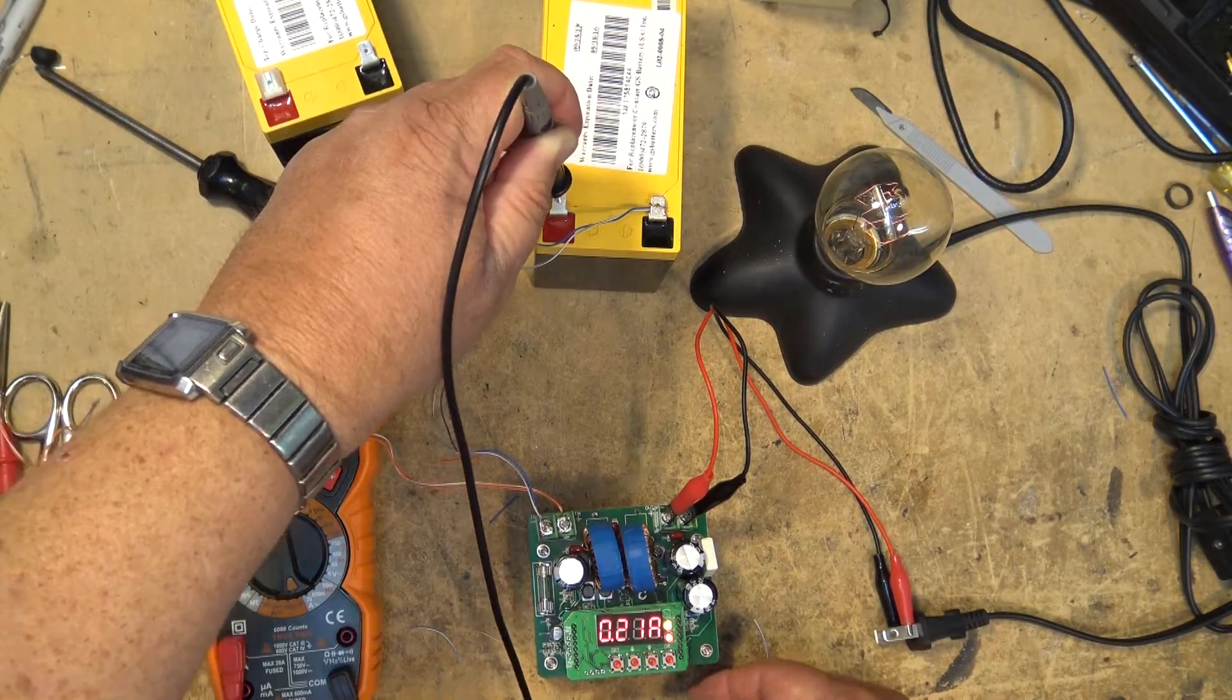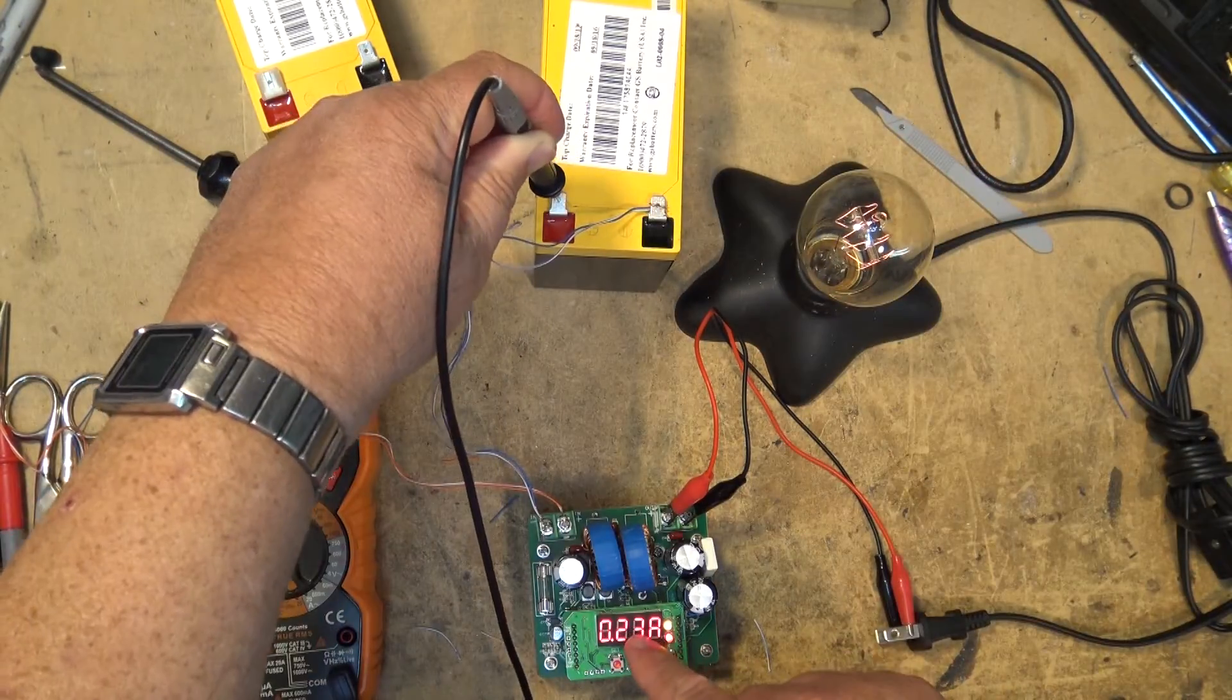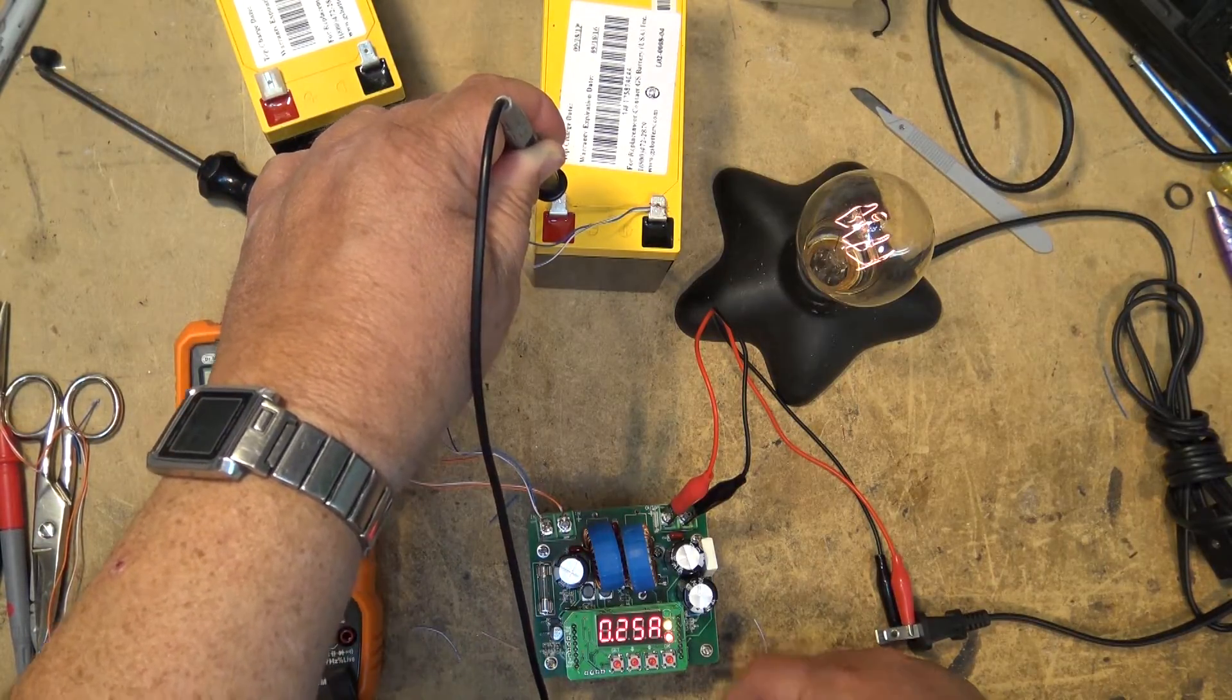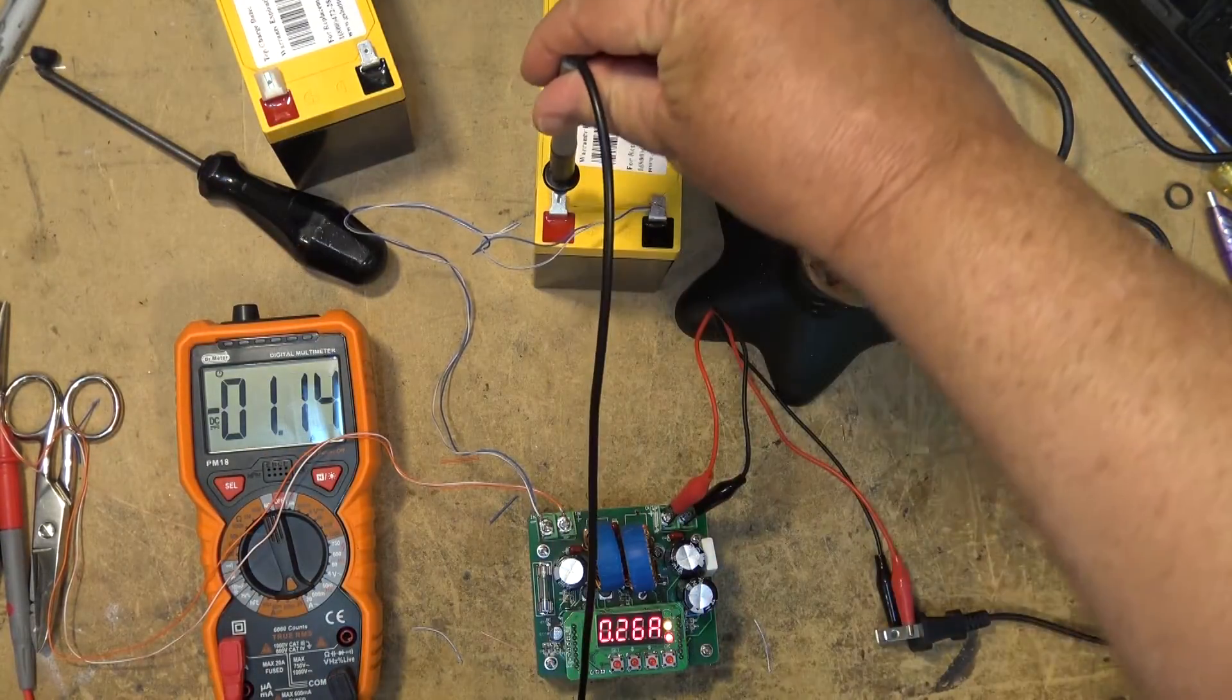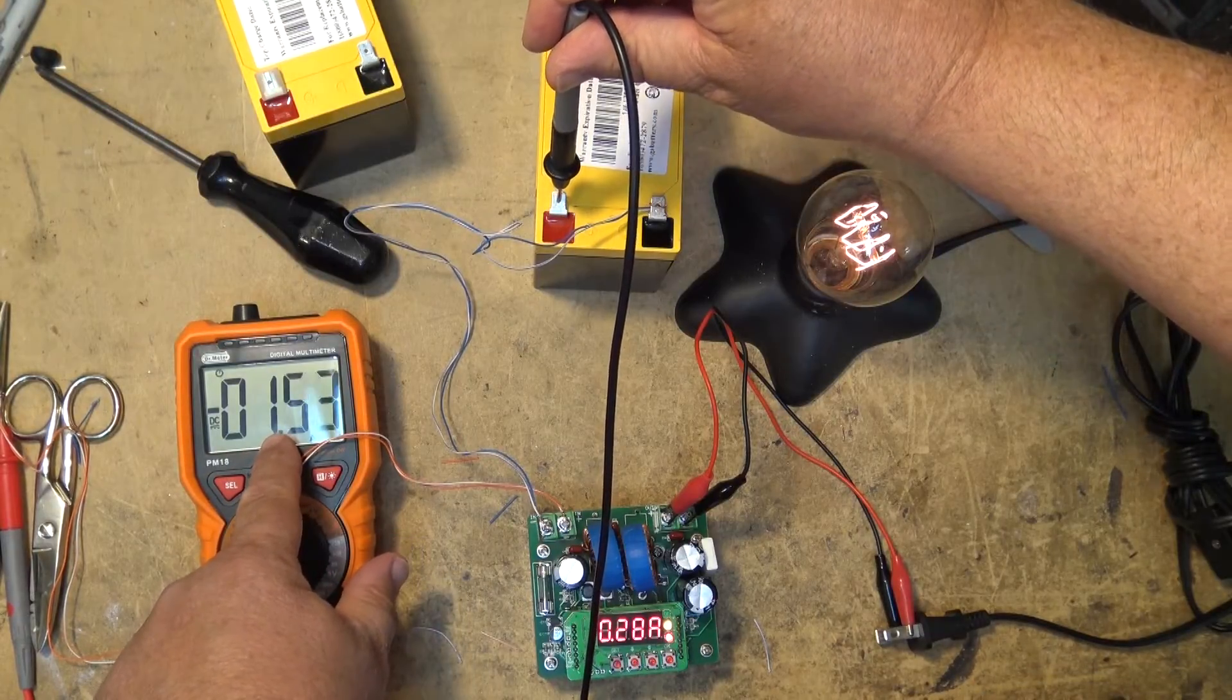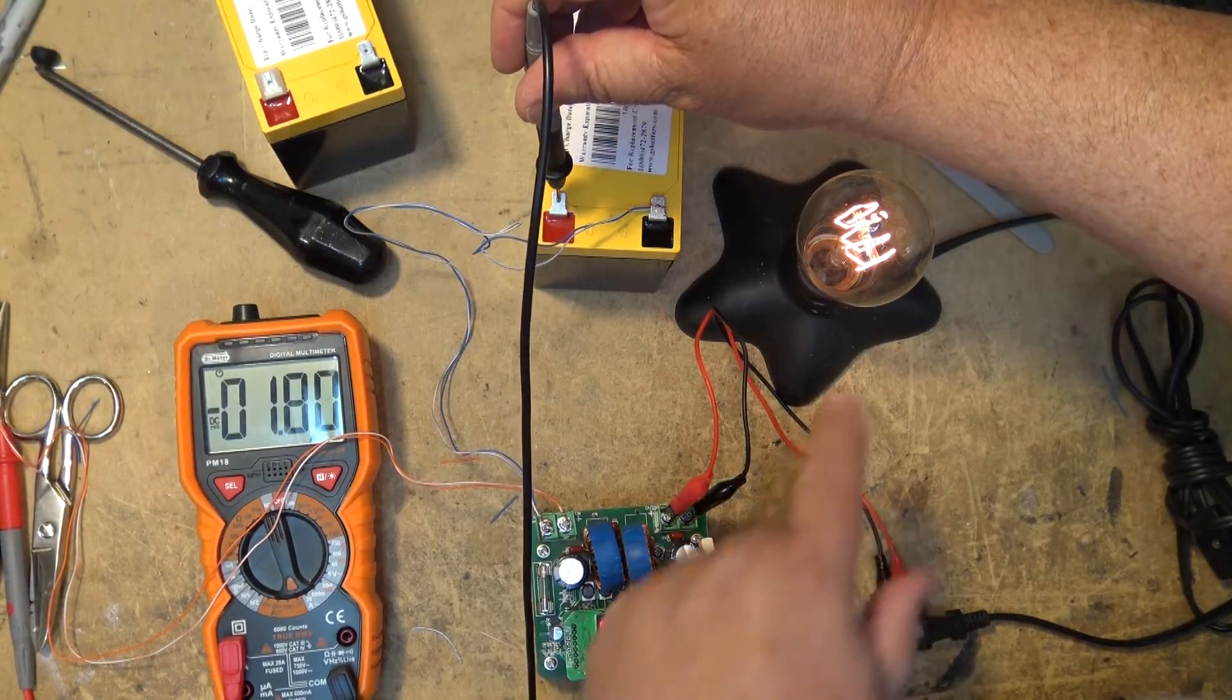Now it'll measure the current. Here comes the light fading up. Now it's measuring the current. This is the output current, not the input current. Here's our input current: we're drawing 1.4 amps. 0.28 amps is the output.